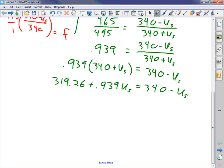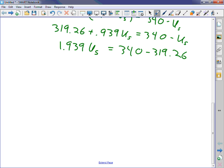Here I actually do want to distribute because then I'm going to be able to gather like terms and solve. At this point in time, this is very simple algebra. So 0.939 times 340, 319.26 approximately plus 0.939 u sub s equals 340 minus u sub s.